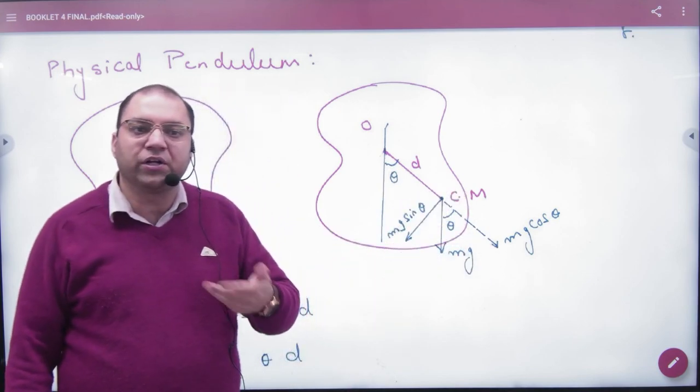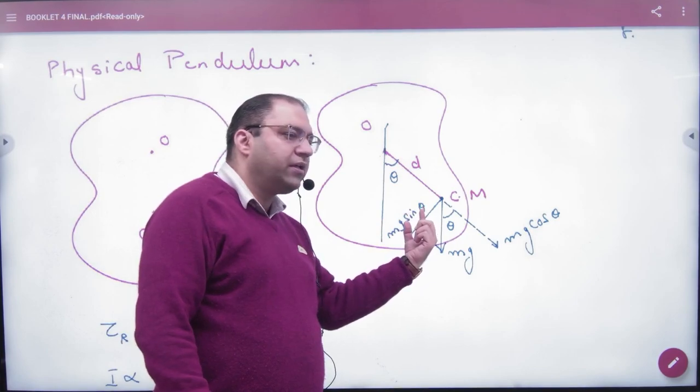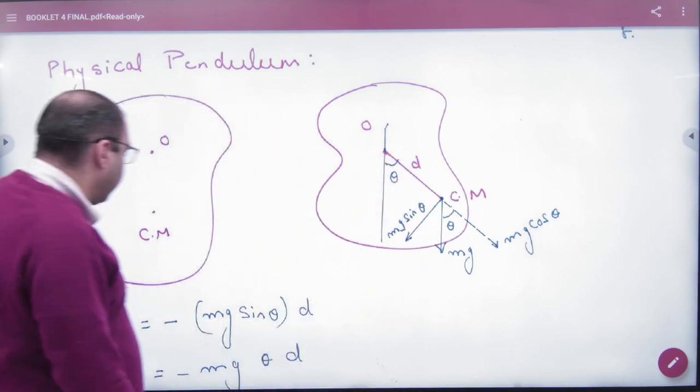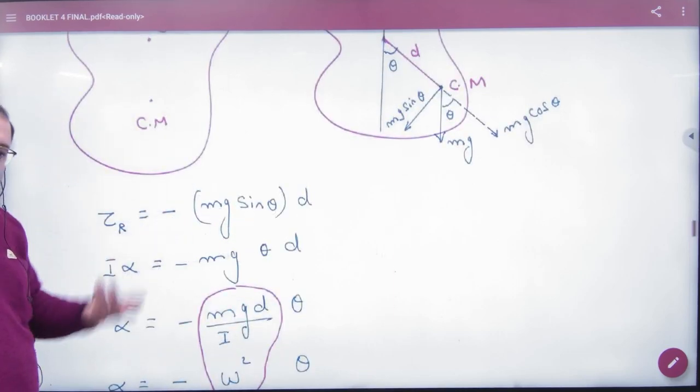What is restoring torque? What will happen? Which force will come back? Mg sin theta. Perpendicular distance from axis is D. So restoring torque is Mg sin theta into D. Now let's see.